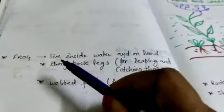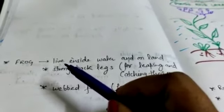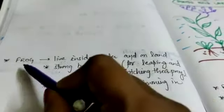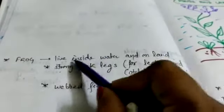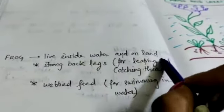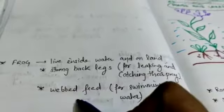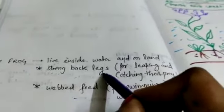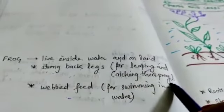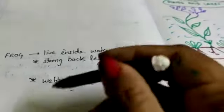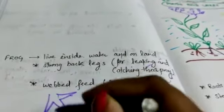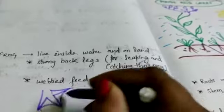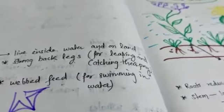Then about one organism that is present around oceans, sorry, around ponds and lakes. Frog lives inside water and land. What adaptations do they have? Strong back and legs for leaping and for catching prey. Then webbed feet, like here, for swimming in water.